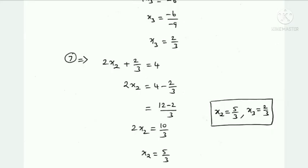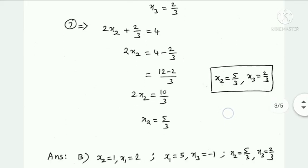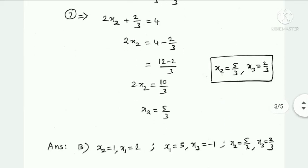If x1 is equal to 0, x2 answer is 5 by 3, x3 answer is 2 by 3. Option B is perhaps the answer.